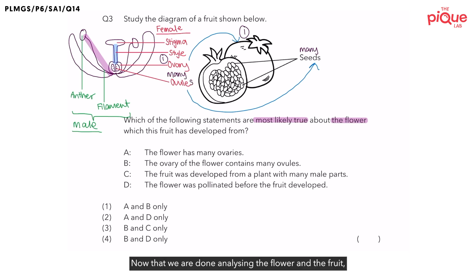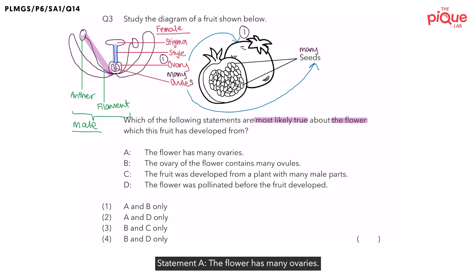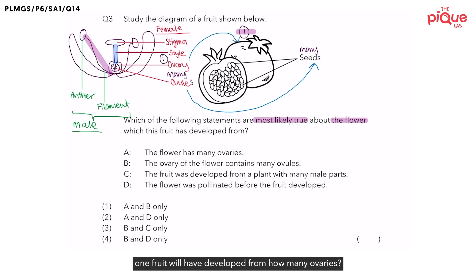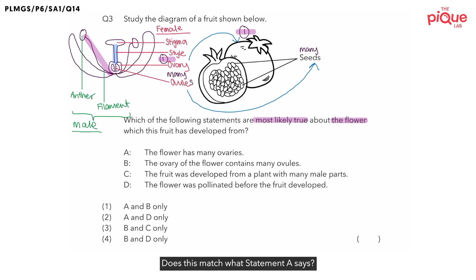Now that we are done analysing the flower and the fruit, let us take a look at the statements below. Statement A: The flower has many ovaries. Let us focus on the fruit that is drawn in this diagram — there is only one fruit. As mentioned, one fruit will have developed from only one ovary. This does not match Statement A, which says many ovaries. Therefore, Statement A is wrong.